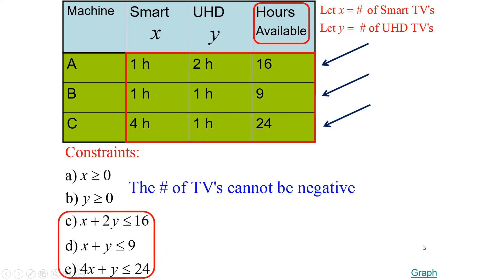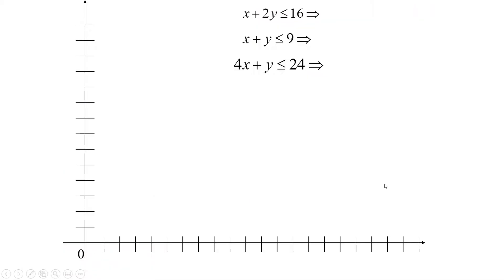Now all we need to do is graph the boundary lines for these three inequalities in quadrant one, using graph paper and a ruler. When you're doing this at home, make sure you have good graph paper and a ruler, because if your graphs are done accurately this is easy — if they're off, it becomes challenging or even impossible. These three inequalities are in general form AX + BY = C. I find it easiest to just find the X and Y intercepts of each line rather than converting to slope-intercept form.